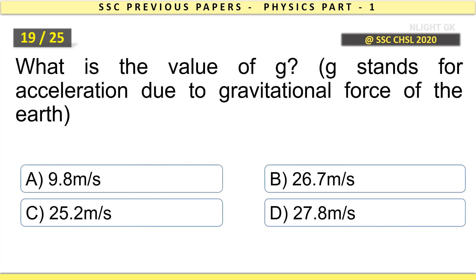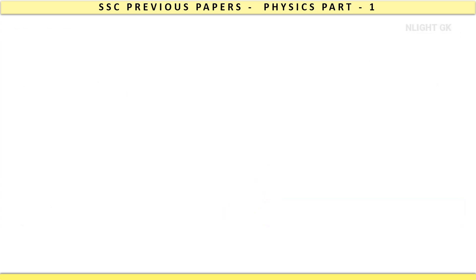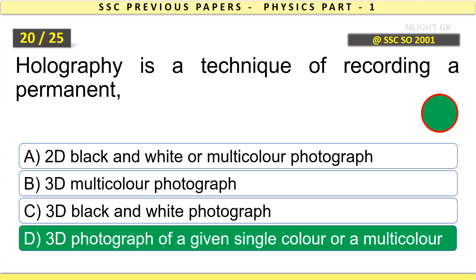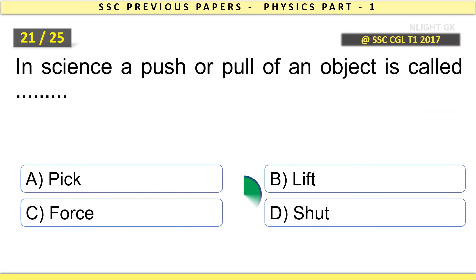9.8 meters per second squared. Holography is a technique of recording a permanent 3D photograph of a given single color or multicolor. In science, a push or pull of an object is called force.